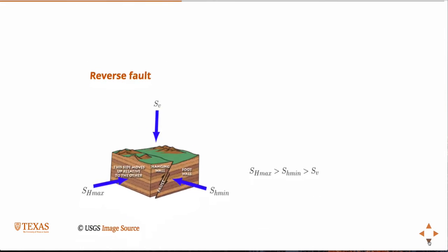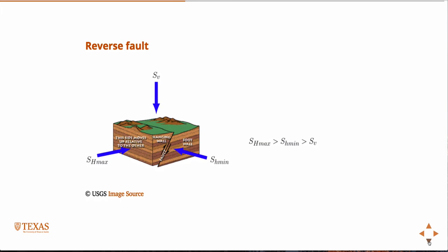And so, the opposite of that is a reverse faulting regime in which the vertical stress is the lowest. And of course, SH max is always greater than SH min, by definition. It's the maximum and the minimum horizontal stresses.